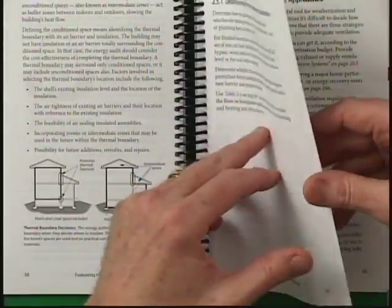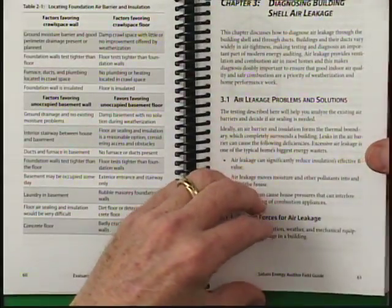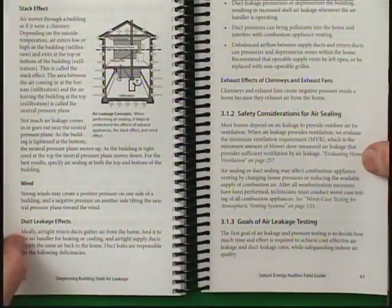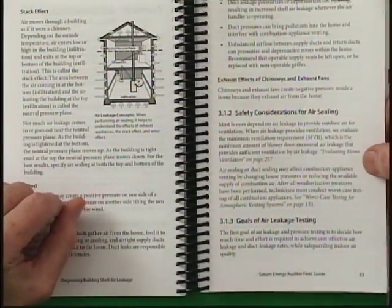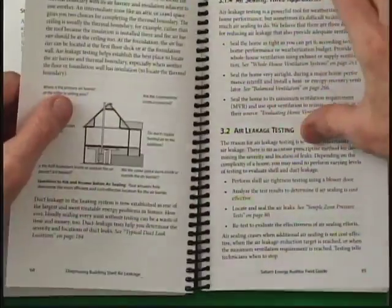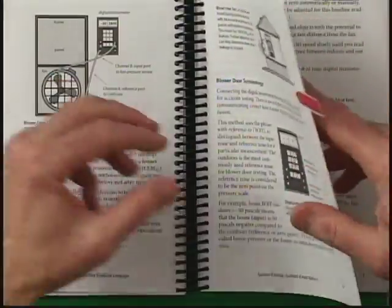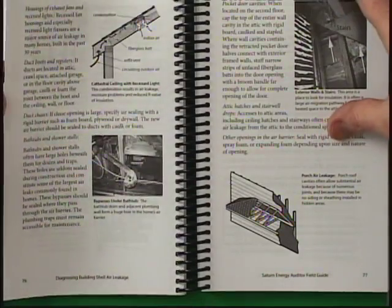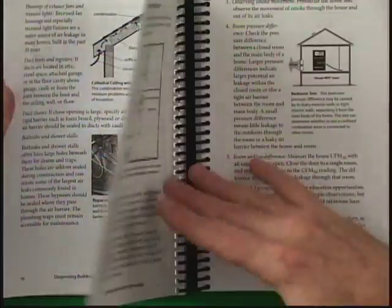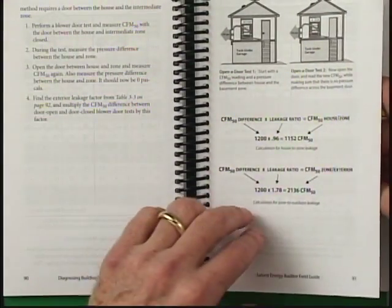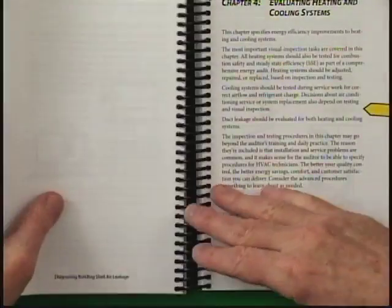Then we have air sealing — a chapter on diagnosing building air leakage in general, what are the problems and solutions, a little bit of a review of building science, blower door testing in detail, where to find the leaks, how to specify how they should be sealed, and how to do more advanced pressure diagnostics.